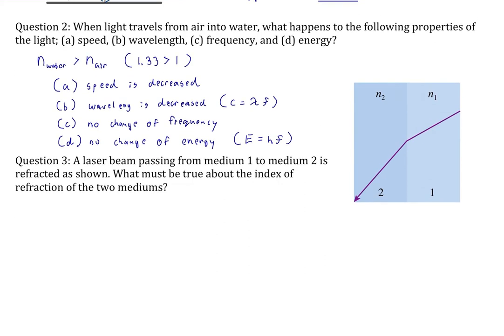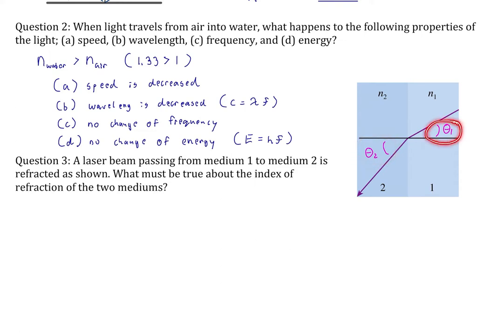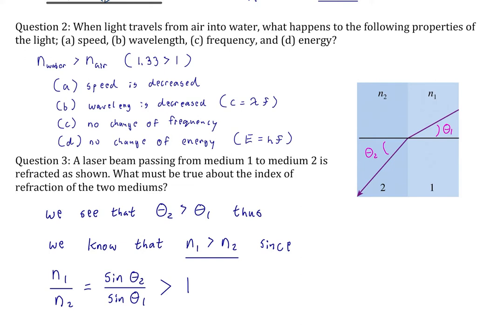Question three: a laser beam passing from medium one to medium two is refracted as shown. What must be true about the index of refraction of the two mediums? Theta two is larger than theta one, so the refracted ray has bent away from the normal. This happens when light travels from a higher to a lower index of refraction — N1 is greater than N2. We can tell because the ratio N2 over N1 equals the ratio of the sines of the opposite angles, and that ratio is greater than one.